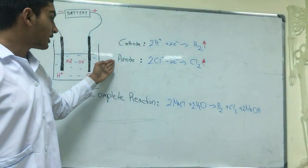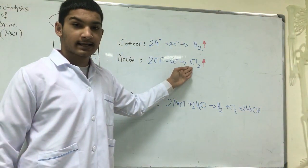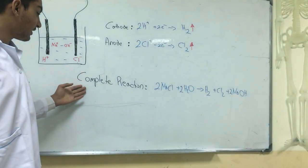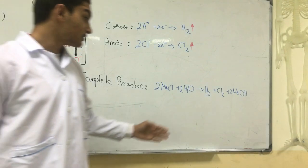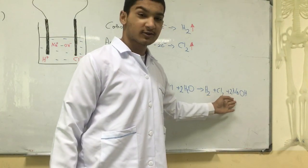At the anode we can see the production of chlorine as gases. Now we can see the complete reaction where the products are hydrogen, chlorine, and sodium hydroxide.